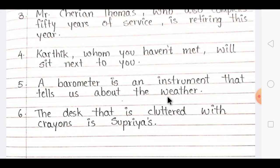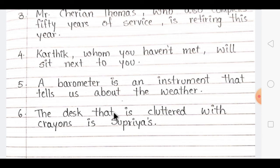Question 6: 'That is Supriya's desk' and 'It is cluttered with crayons.' Use defining clause, so combine with 'that' and no comma. The sentence becomes: 'The desk that is cluttered with crayons is Supriya's.' This shows possession — the crayons belong to Supriya.